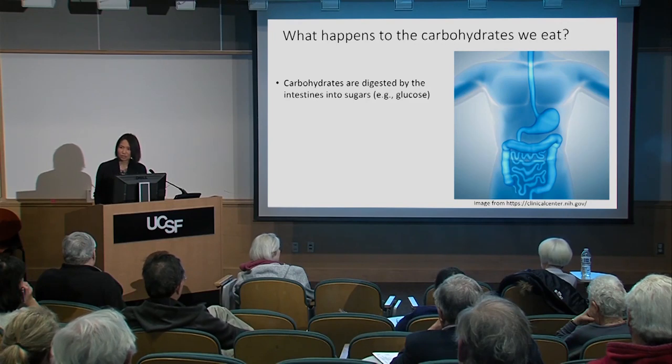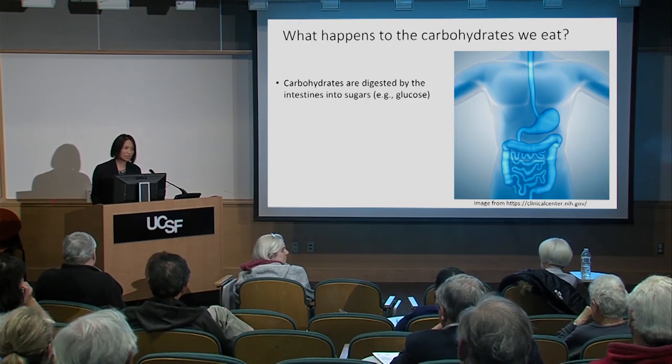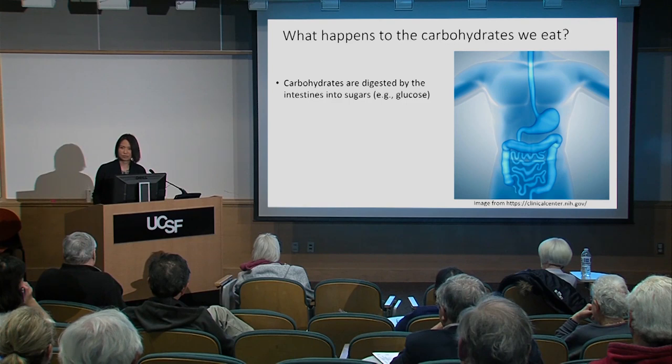A sugar is just a very small molecule — it's the basic unit of a carbohydrate. A carbohydrate is a bunch of sugars all sort of attached together. So your intestine does the job of taking that carbohydrate — the apple, the piece of bread, that bowl of rice — and breaking it down into individual molecules of sugar. The main sugar type we get from carbohydrates is glucose, which is just one type of sugar.